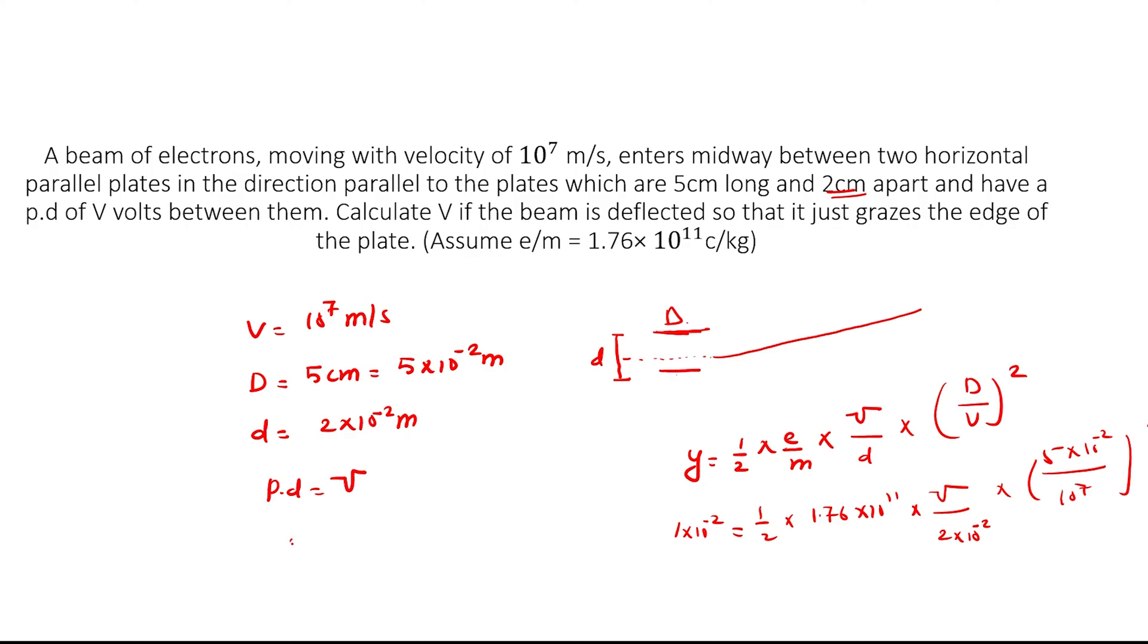Now 2 into 10 to the power minus 2 multiply by 2 into 10 to the power minus 2 divided by 1.76 into 10 to the power 11. This gives 2 into 10 to the power minus 17, then 2 into 4.